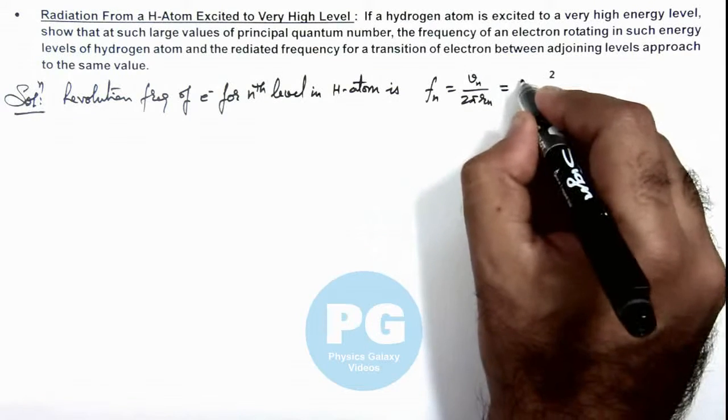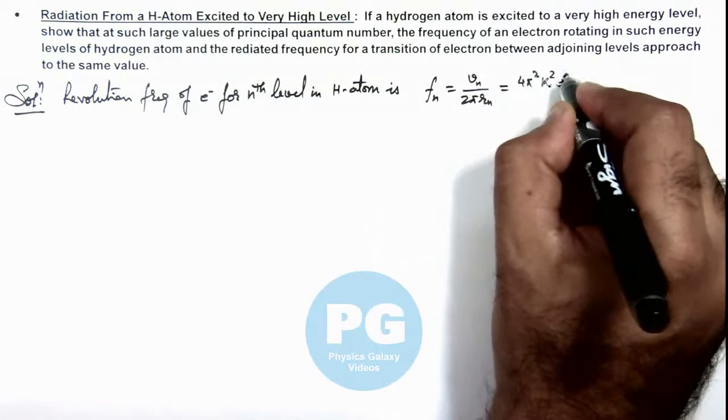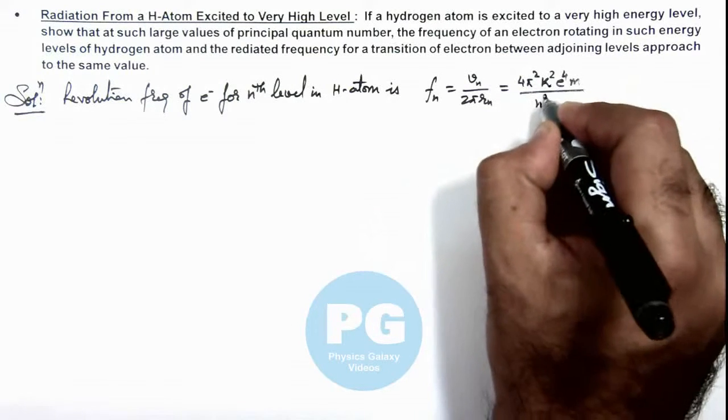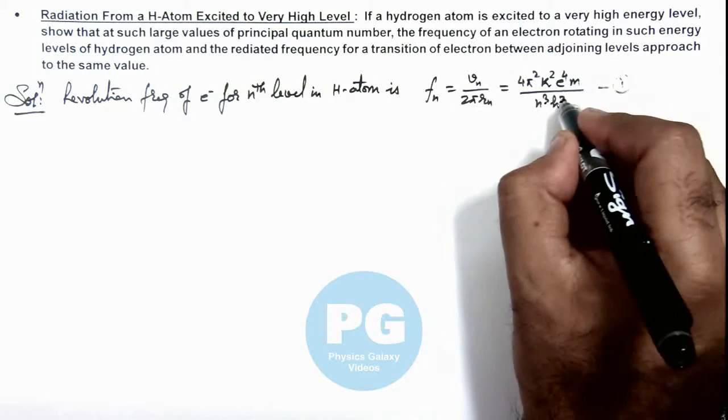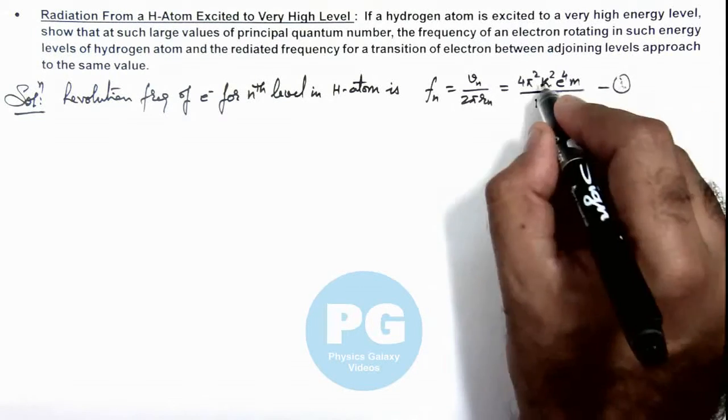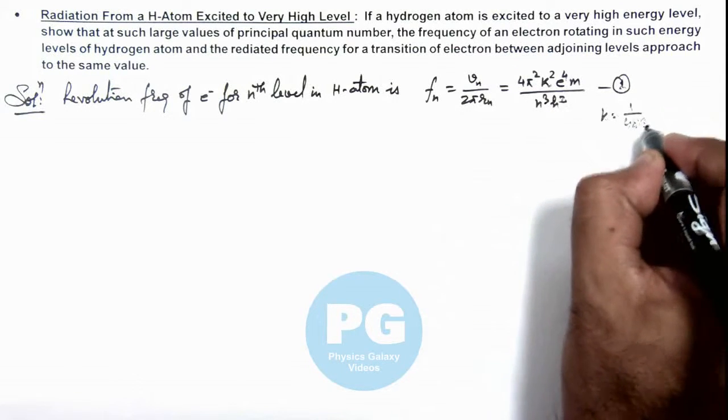This can be given as c by lambda, so we can write it Rc multiplied by 1 by (n-1)² minus 1 by n².